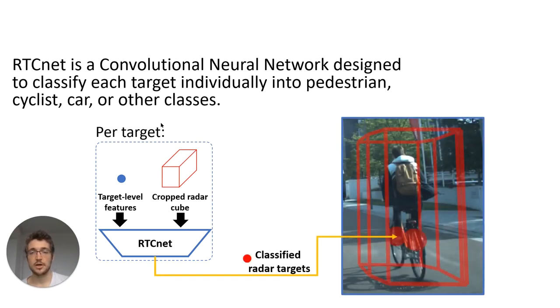RTCnet is a CNN, a convolutional neural network, and it is designed to classify each target individually into the following classes: pedestrian, cyclist, car, or other. As you can see, the target and the cropped cube goes in, and the classified radar target comes out. On this image, we marked cyclist classified radar targets as a thread.